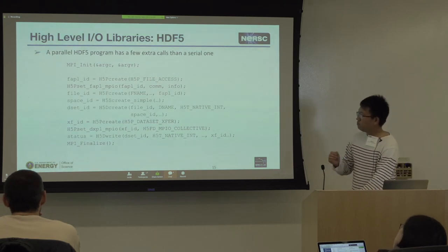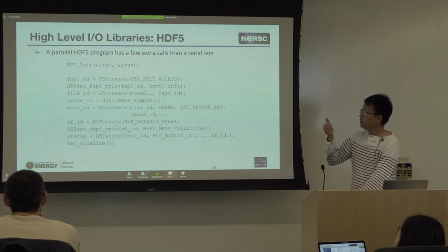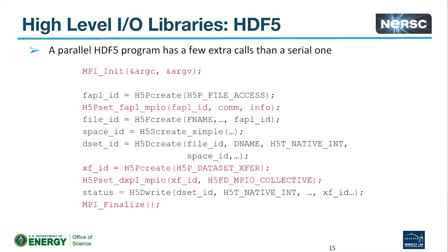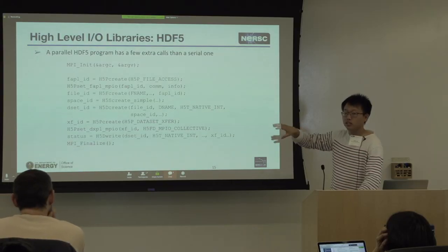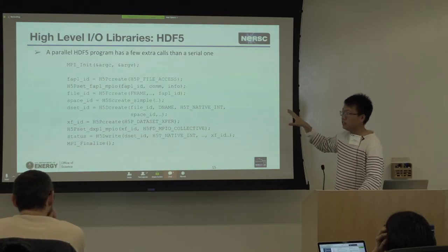By using HDF5, when you want to try parallel I/O, you simply add a few red lines of code, and that can immediately change your serial code into a parallel code.